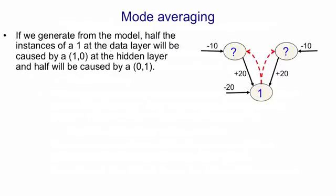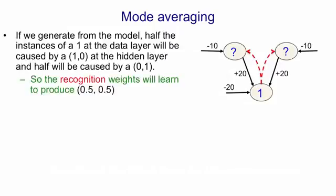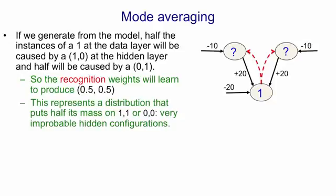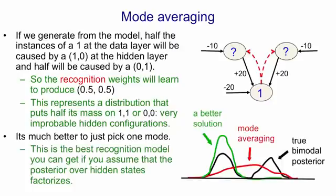So now think what the learning will do for the recognition weights. Half the time we have a one on the visible there, the left-most unit will be on at the top. So it will actually learn to predict that that's on with a probability of 0.5, and the same for the right unit. So the recognition units will learn to produce a factorial distribution over the hidden layer of 0.5, 0.5. Now that factorial distribution puts a quarter of its mass on the configuration 1,1, and another quarter of its mass on the configuration 0,0, and both of those are extremely unlikely configurations, given that the visible unit was on. It would have been better just to pick one mode. That is, it would have been better for the visible unit just to vote for truck or just to vote for earthquake. That's the best recognition model you can have. That's the best recognition model you can have if you're forced to have a factorial model.